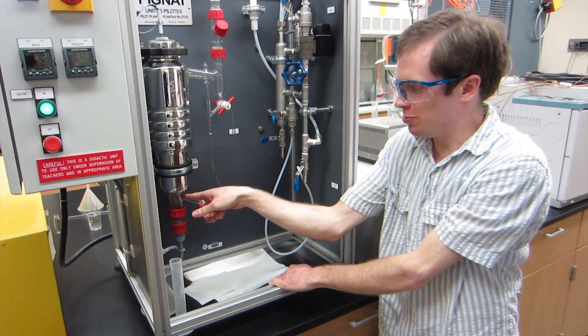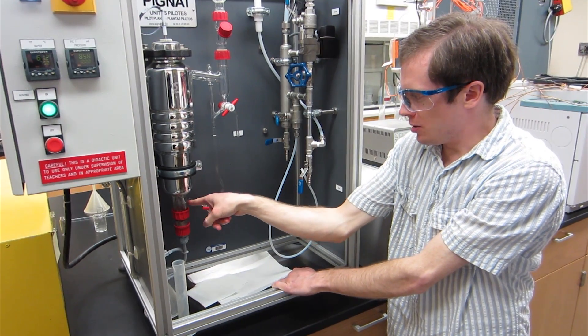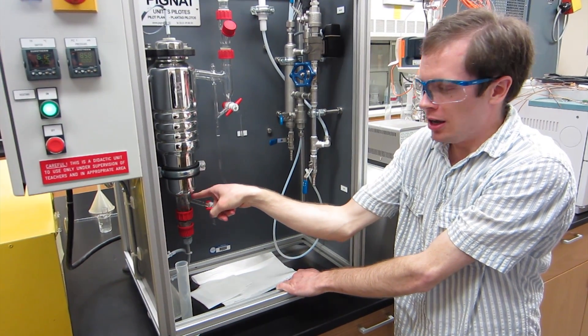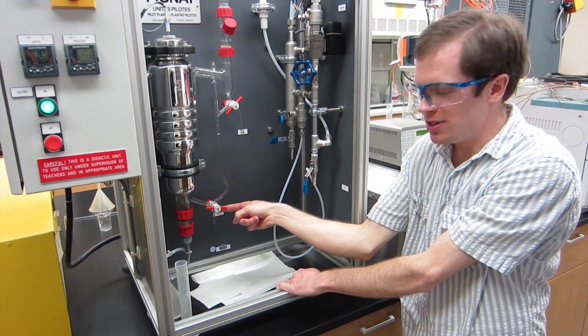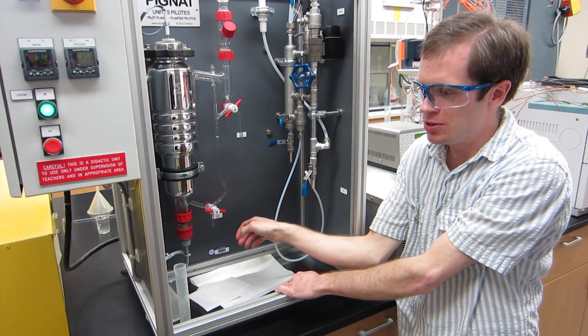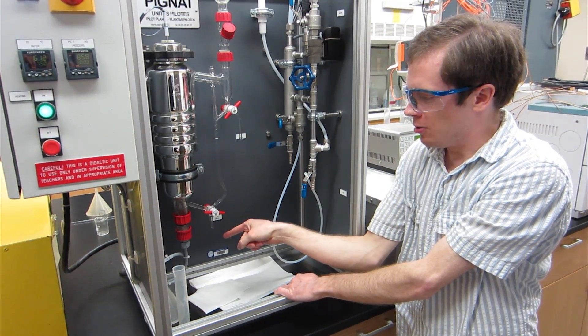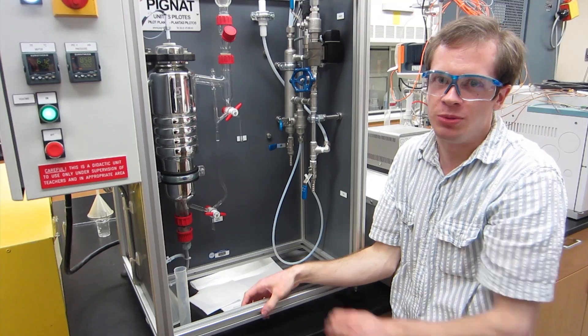So what we do is we first open this valve this way so it only drains from here and we purge it about 15 to 20 milliliters into a waste receptacle and then only then do we take our liquid sample.